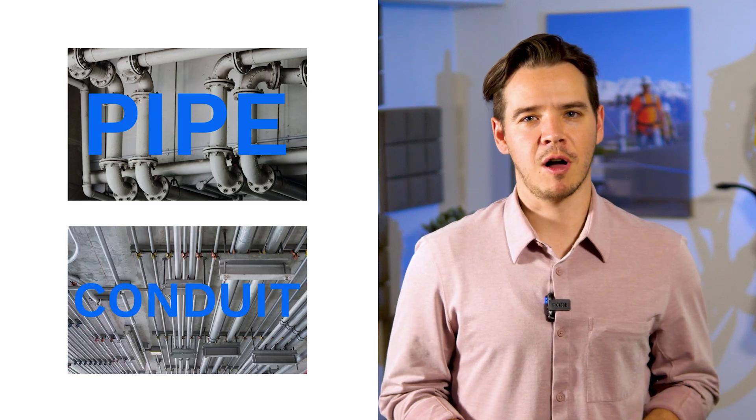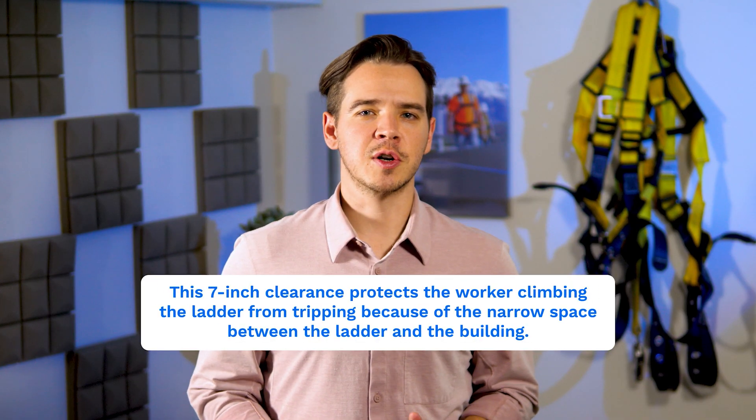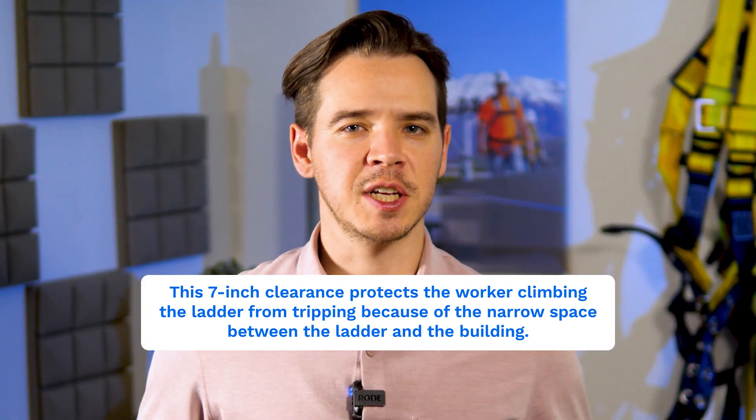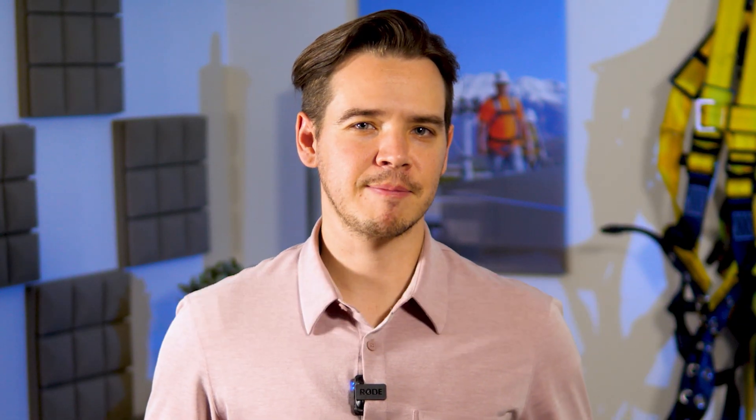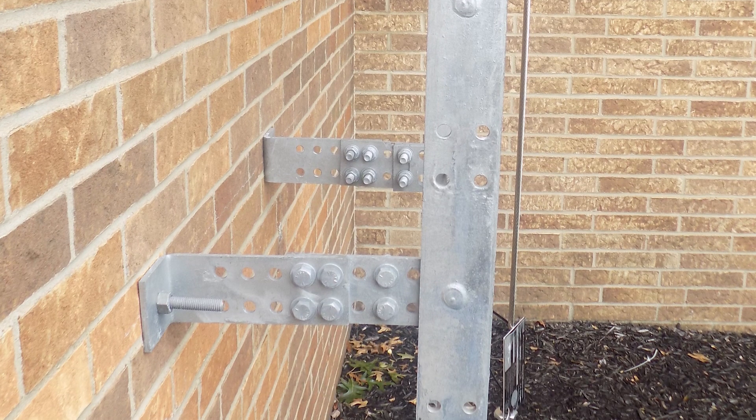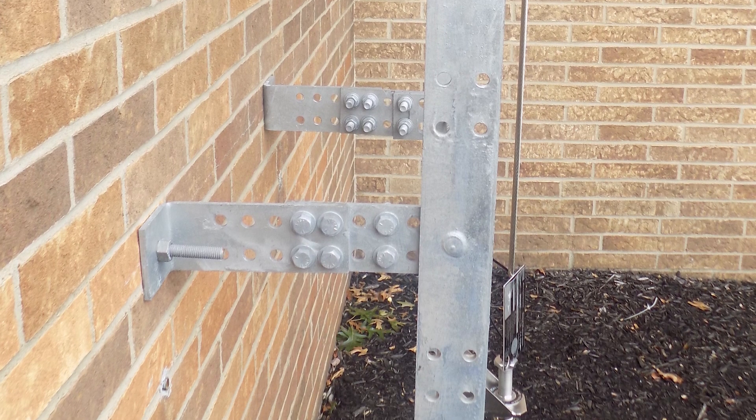This is true for permanent obstacles like pipe or conduit as well. This seven inch clearance protects the worker climbing the ladder from tripping because of the narrow space between the ladder and the building. This is much easier thanks to the new fixed ladder design, which allows for accommodation around obstructions.